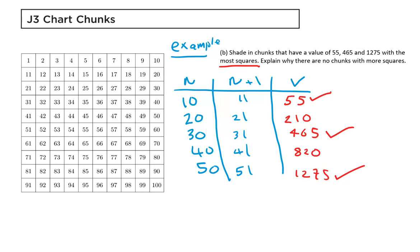So, for example, if we look at the last one, the value using that formula is n times n plus 1 divided by 2. Well, that's 50 multiplied by 51 divided by 2 gives 1275, and that uses 50 squares.